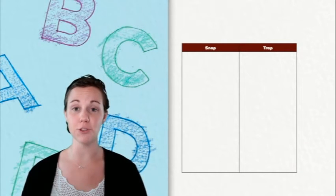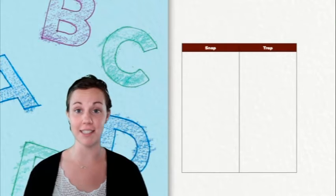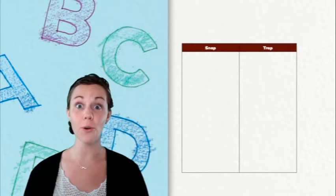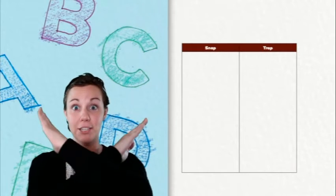We'll look closely at each one to decide if it's a snap, meaning we can easily decode it, or if it might be a trap.